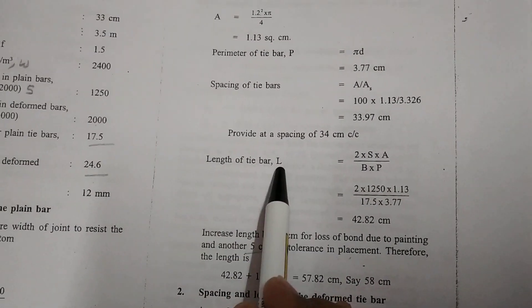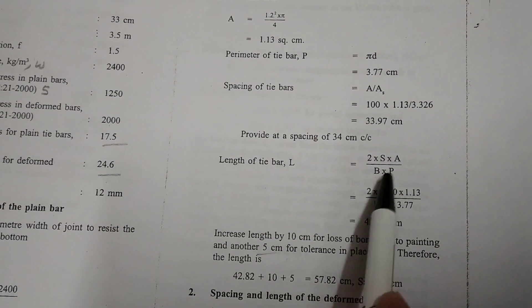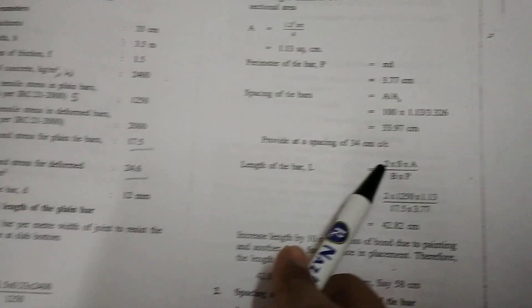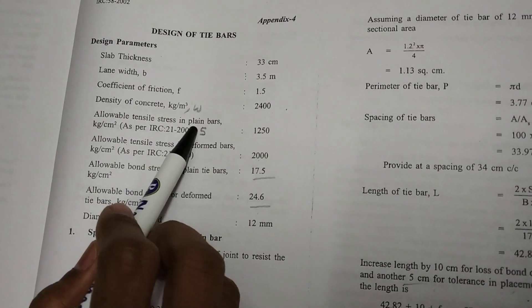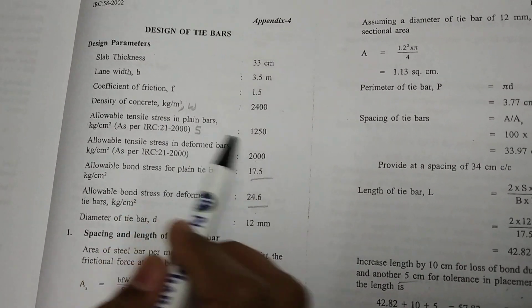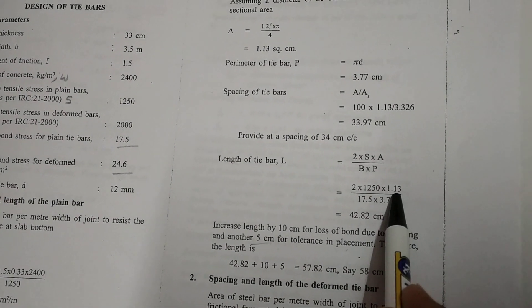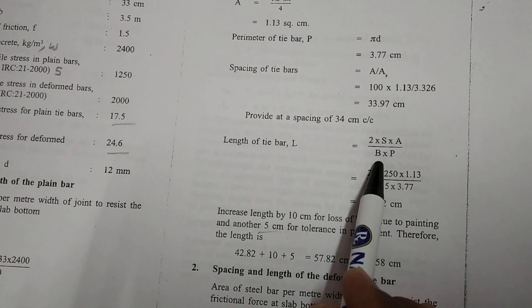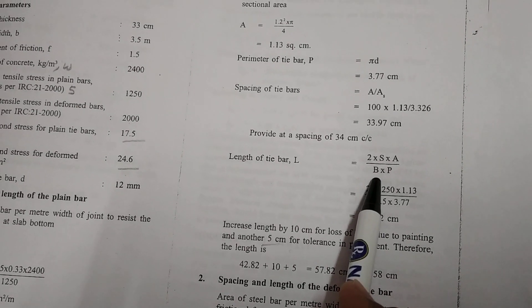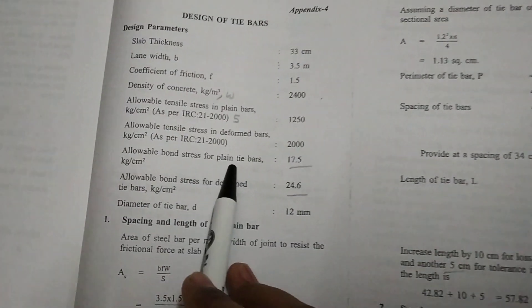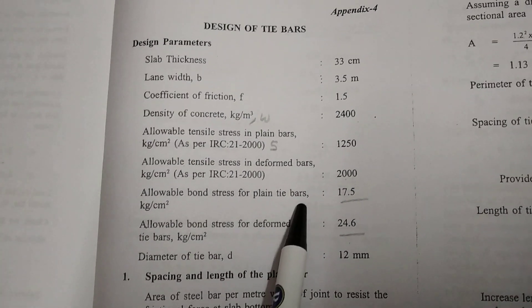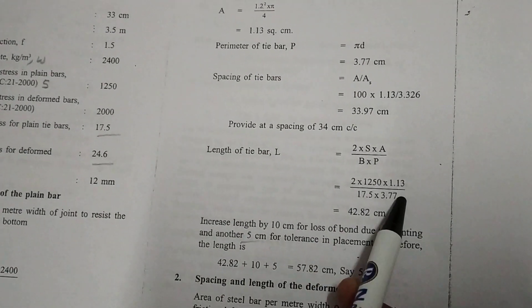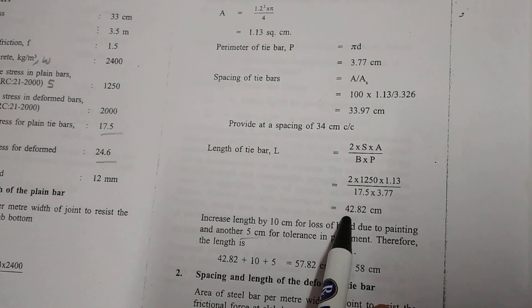How we can find the length of the tie bar. The length of tie bar is equal to 2SA by BP. Where 2 is the constant, SA is allowable tensile stress in plain bars, A is the cross sectional area which we have calculated earlier, and B is the allowable bond stress in the plain bars, and P is the perimeter. We have to substitute all the values. We will get in centimeters.